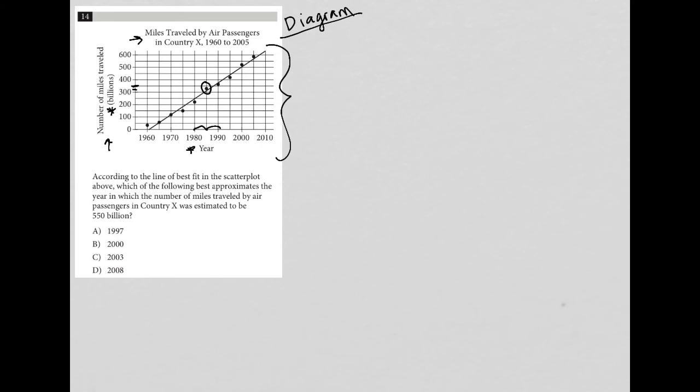Now I go to the question. It says: according to the line of best fit in the scatter plot above, which of the following best approximates the year in which the number of miles traveled by air passengers in Country X was estimated to be 550 billion? So I'm looking at the x-axis. Now I'm just using my graph.